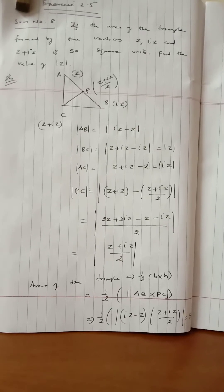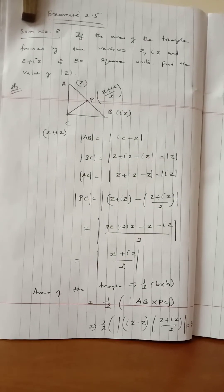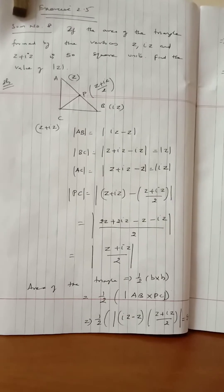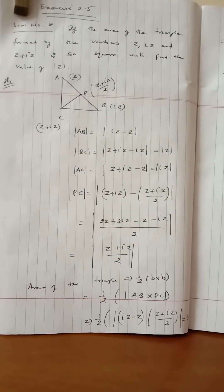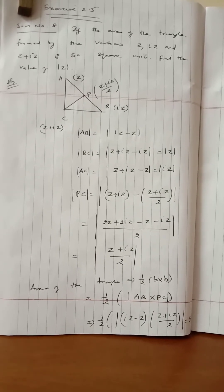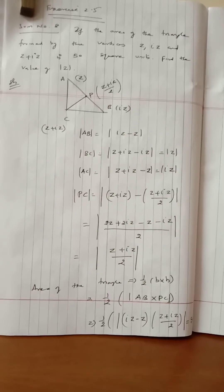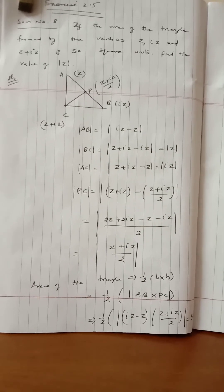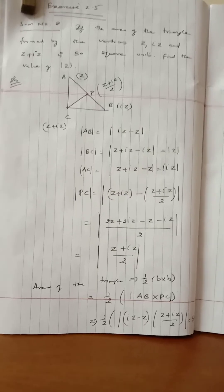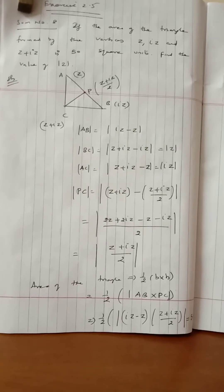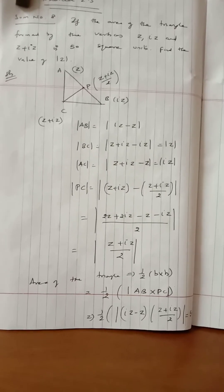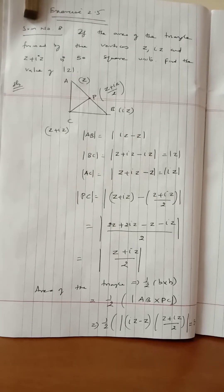Area of triangle equals half into breadth AB times height CP. So area equals half into AB into PC.